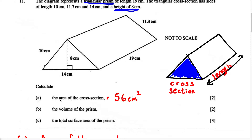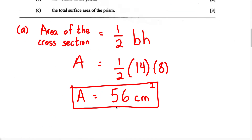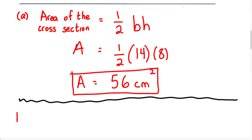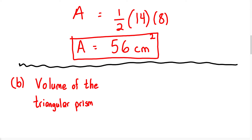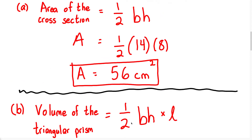For part B, they want us to calculate the volume of the prism. To calculate the volume, we use the formula: volume equals half base times height times length. The volume of the triangular prism equals half base multiplied by height multiplied by the length. Notice that half base times height is the same as the area of the cross section, so the formula can also be written as area of the cross section multiplied by the length.